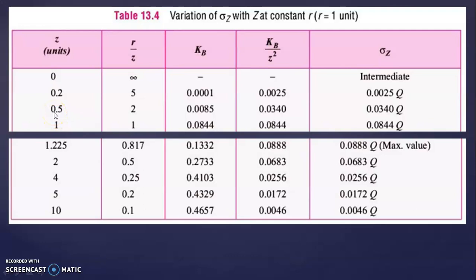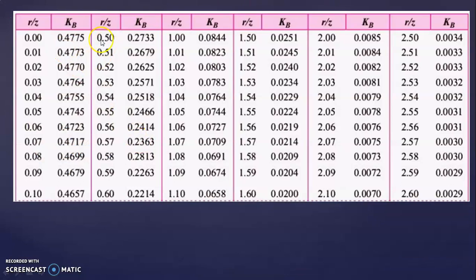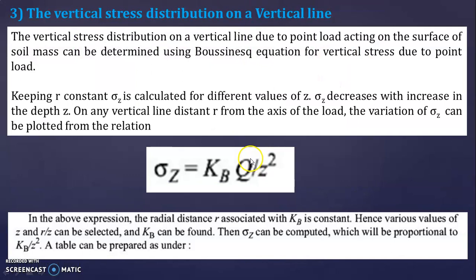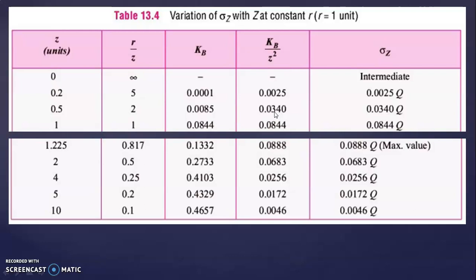For Z equal to 0.5, R divided by Z equals 2. From the table, KB for ratio 2 is 0.0085. So KB divided by Z squared is 0.0085 divided by 0.5 squared, giving 0.0340. Sigma Z equals 0.0340 times Q. For Z equal to 1, R divided by Z equals 1 divided by 1, which is 1. From the table, KB for ratio 1 is 0.0844. KB divided by Z squared is 0.0844 divided by 1 squared, giving 0.0844. Sigma Z equals 0.0844 times Q.